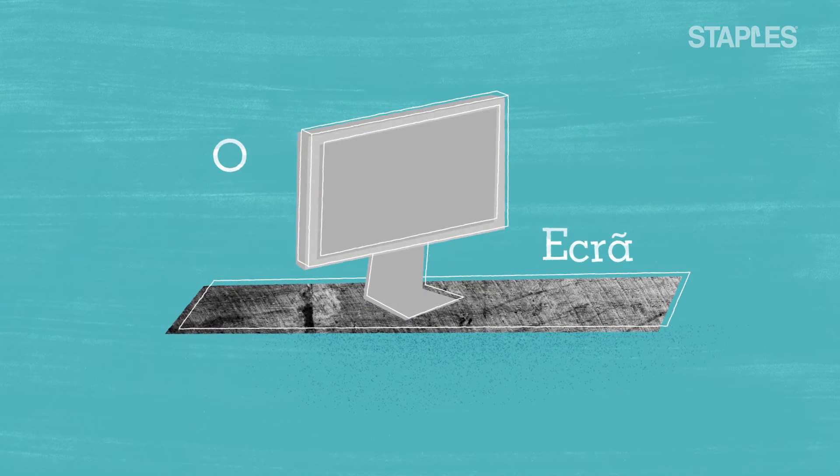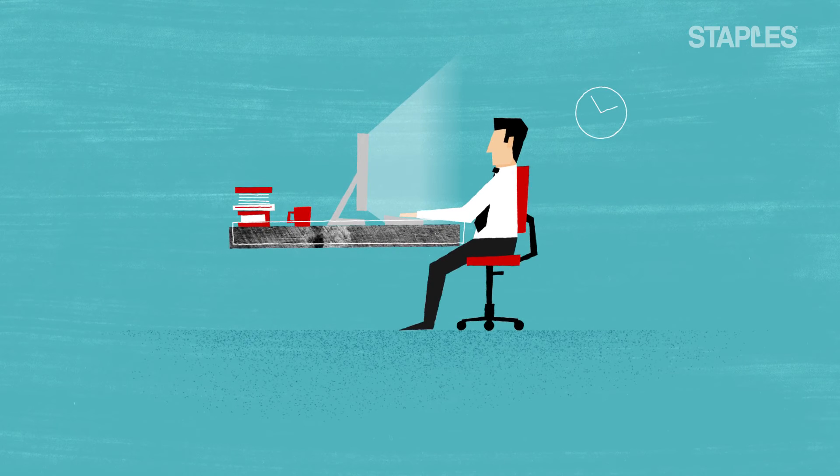The screen. This is where all the action happens, so it's important that you see everything as clearly as possible. Tilt your screen so that the bottom of it is a little closer to you than the top. This will also reduce glare from the screen, decreasing the risk of strained eyes or headaches.